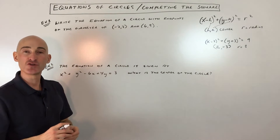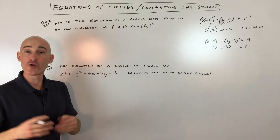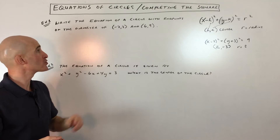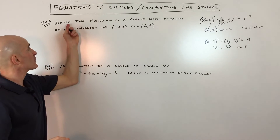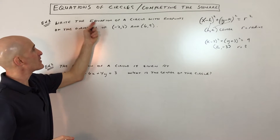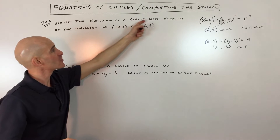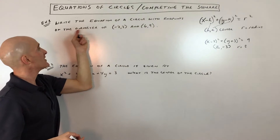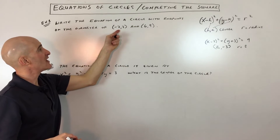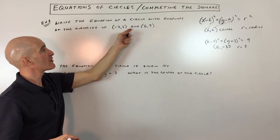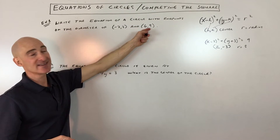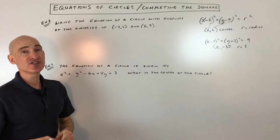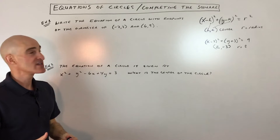See if you can pause the video and do these problems on your own. The first one says: write the equation of a circle with endpoints on the diameter of negative two comma three, and six comma nine.